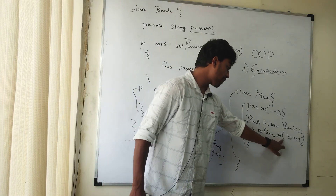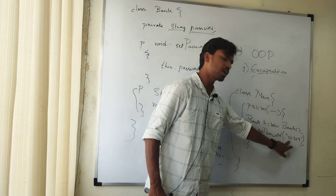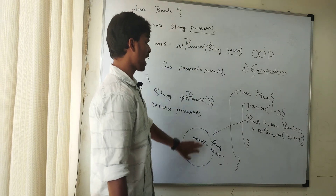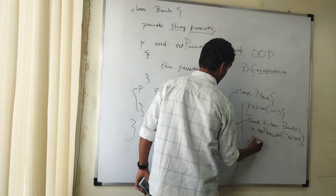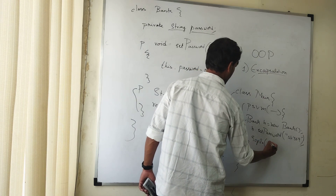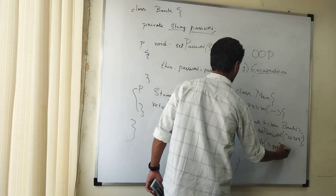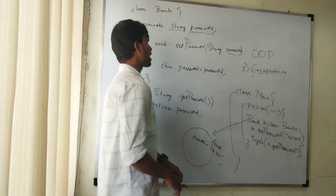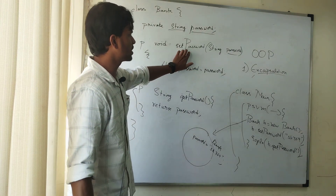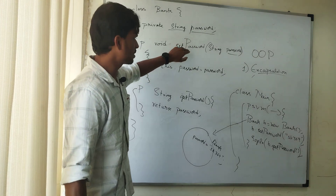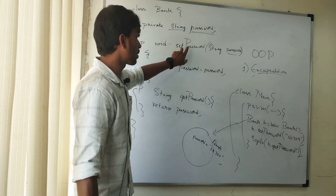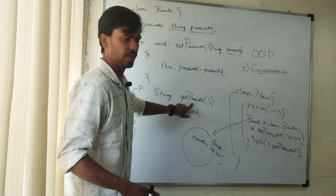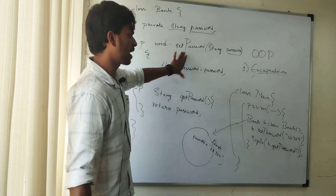We call b.setPassword() to set the value. The private password variable will be initialized — for example with 'SK369'. The value will be stored with the help of the setPassword method by passing the actual argument. To retrieve it, we write: System.out.println(b.getPassword()), which will give us the password.